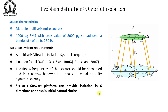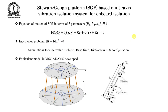A six-axis Stewart platform can provide isolation in six directions and is thus a natural initial choice. With six degrees of freedom, we can design the legs such that forces and moments coming from the spacecraft base are not transmitted to the top platform. That is our goal: to design a Stewart platform-based multi-axis vibration isolation system for onboard isolation.